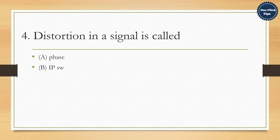4. Distortion in a signal is called A. Phase, B. IP switch, C. Noise, D. Amplitude. The correct answer is C. Noise.